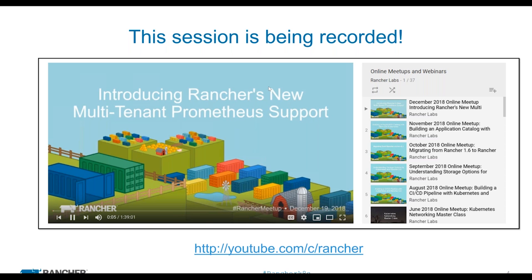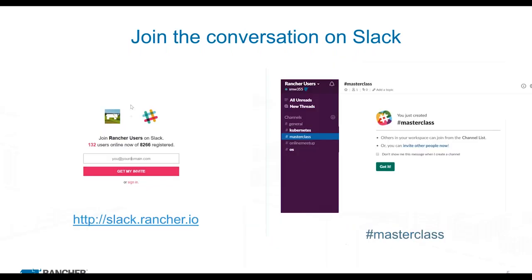This session is being recorded, as are our other classes. We do these master classes on various topics almost every Tuesday — at least two to three times a month. You can find them all on YouTube, or on our rancher.com Kubernetes master class page. If you scroll to the bottom, you'll see past classes and be able to download recordings and slides — always free.